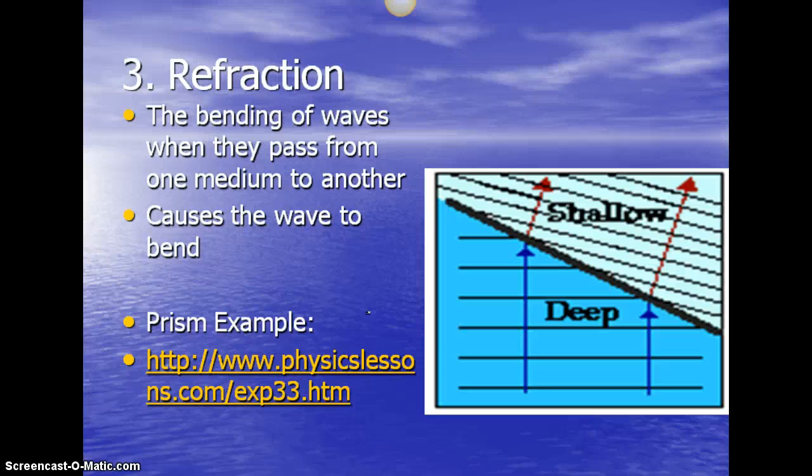an example could be if you're looking at fish from the top of the water. The fish will look like they're in one location, but they're actually not in that exact spot because the light that's traveling from the air to the water changes speed. Another example would be a straw in a glass of water. And you look through the side of the glass, it'll look like the straw is cut.